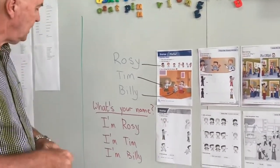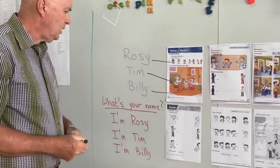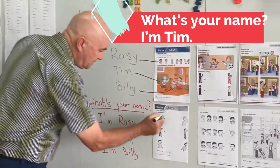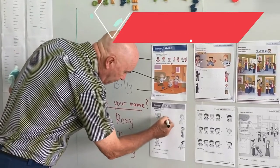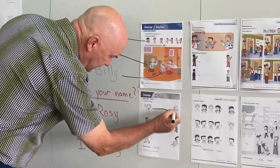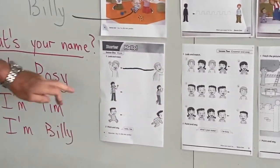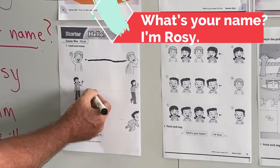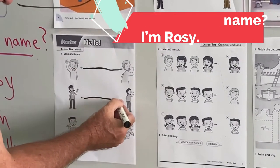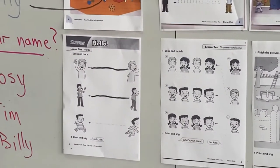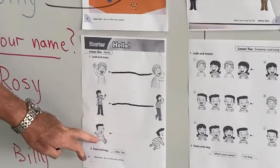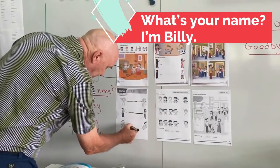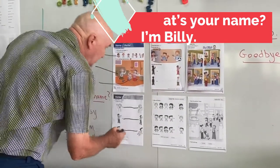Let's do this here. What's your name? The boy — Tim. I'm Tim. The line is Tim. The girl, what's your name? I'm Rosie. Let's draw the line to Rosie. And the little baby boy is Billy. Let's draw the line to Billy.